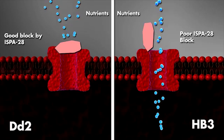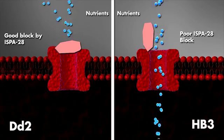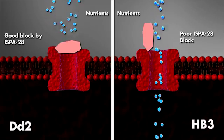One such compound, ISPA28, is 800-fold more active against DD2 channels than those of Hb3.